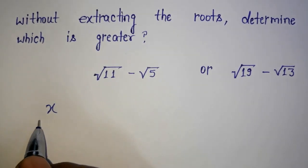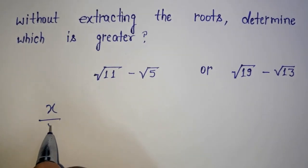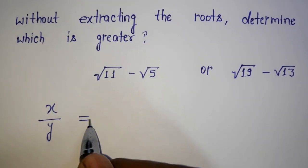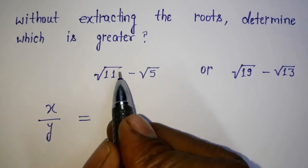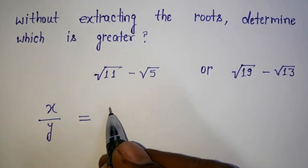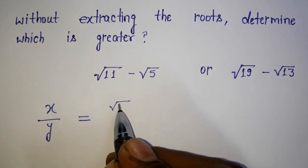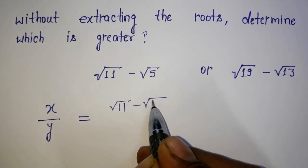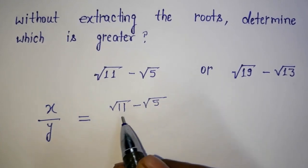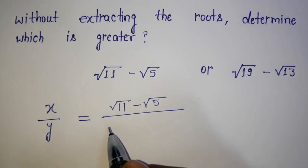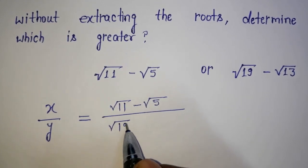I have taken x as root 11 minus root 5, divided by y which is root 19 minus root 13. So I am forming the ratio x over y.